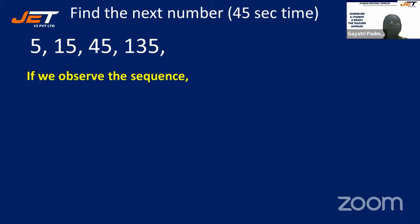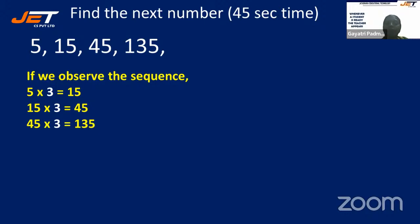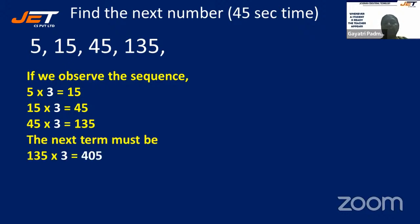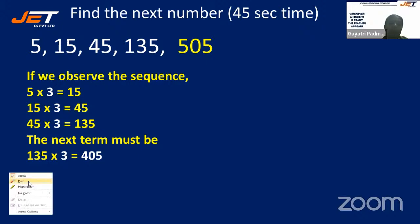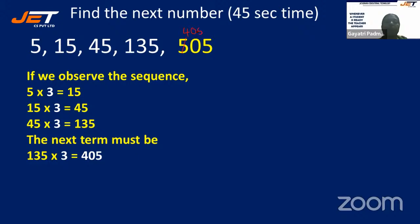If we observe, 5×3 is 15, 15×3 is 45, 45×3 is 135. So the next must be 135×3, which is 405. The answer is 405.